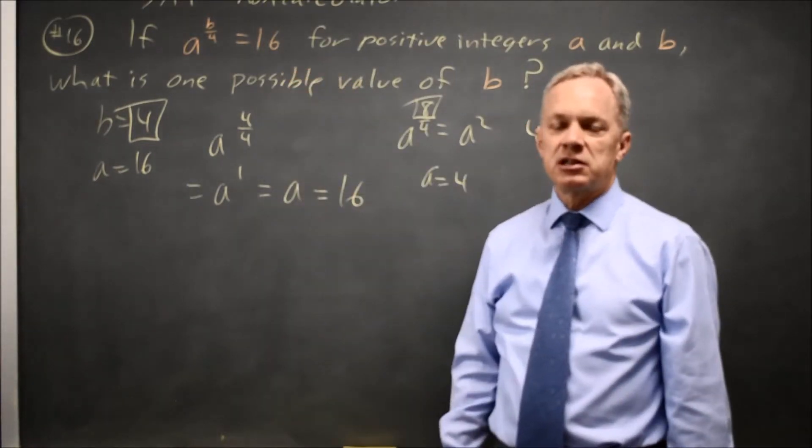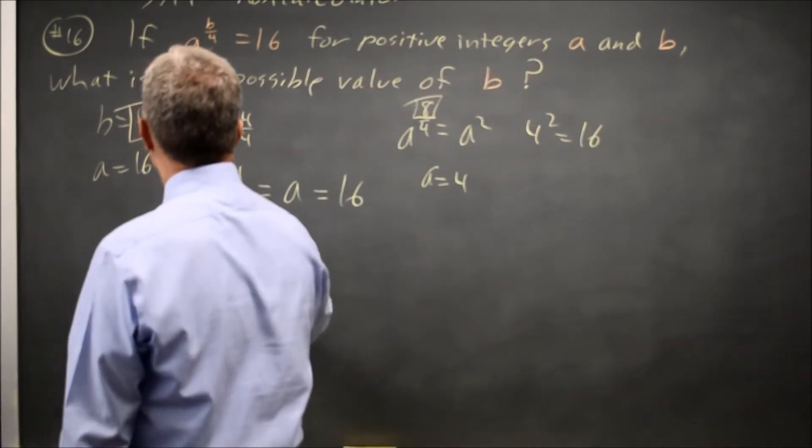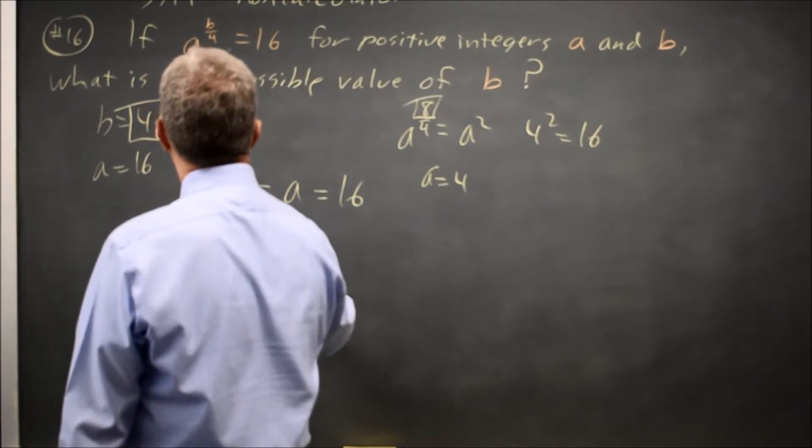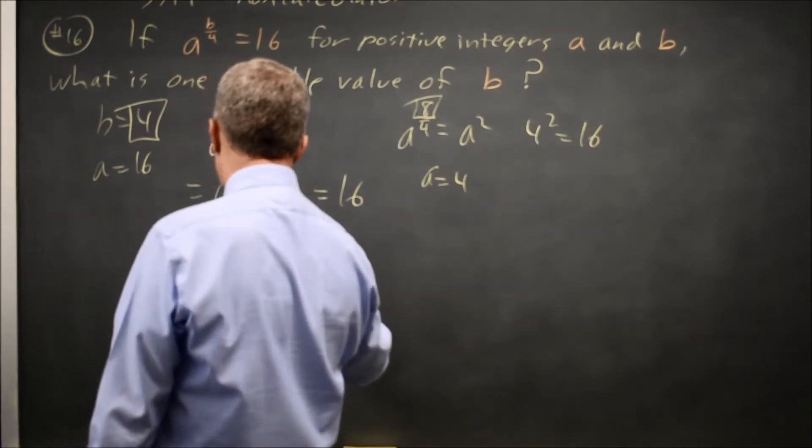In any case, College Board often asks you exponent problems. If you want to solve this algebraically rather than guess and check, I have a to the b over 4 equals 16. a to the b over 4 equals 2 to the 4.